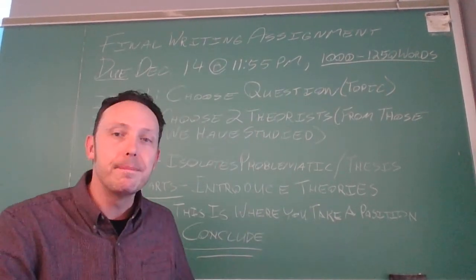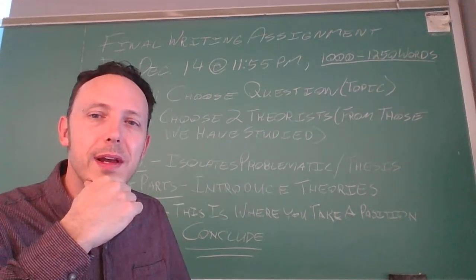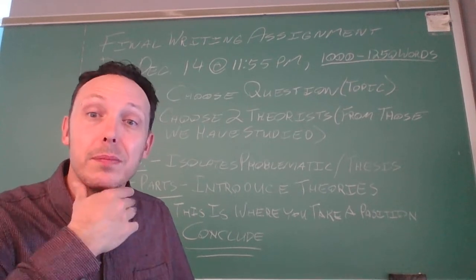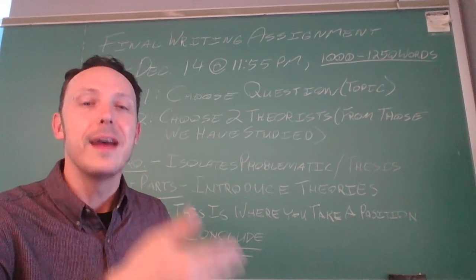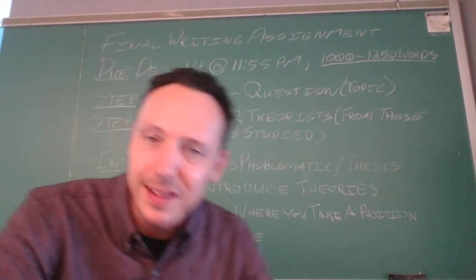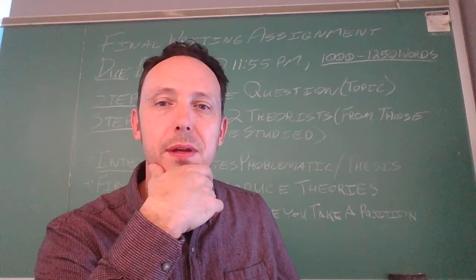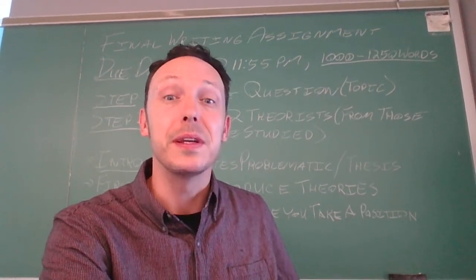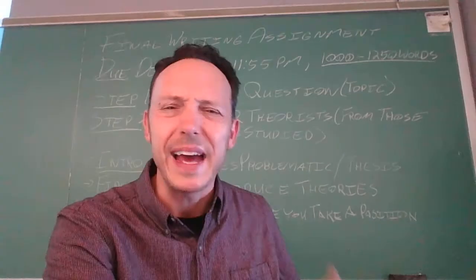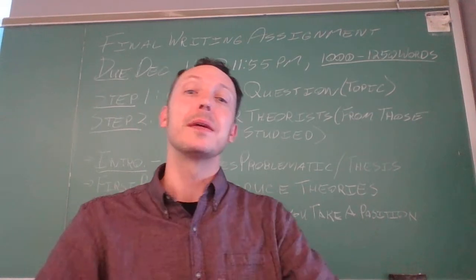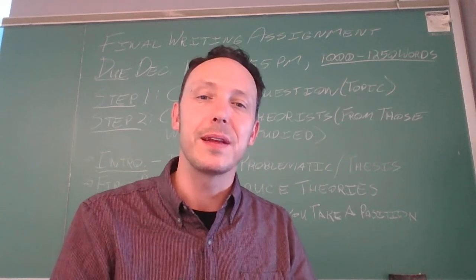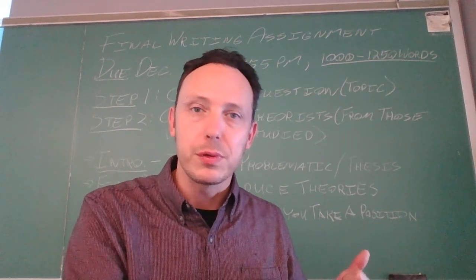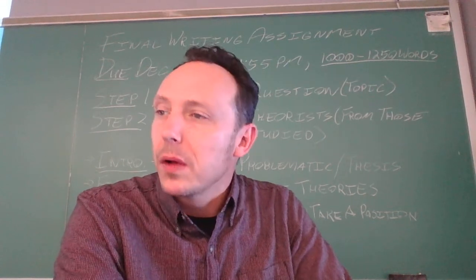Step two is pick two theorists. Pick two theorists that somehow jumped out at you in this course, that somehow spoke to you. This doesn't mean you have to agree with these theoretical positions. Some of the best papers I've ever read have been critical of the theories. For a theory to jump out at you, sometimes the theory jumps out because there's something wrong with it. Largely my effort, my reasoning, my critical endeavor is framed by figuring out what the heck is wrong with this theory. I've given you the opportunity to pick two of these theorists. You don't have to agree with them, you don't even have to particularly like them, but nonetheless they have to speak to the topic that you've picked in some way that you find interesting or important.